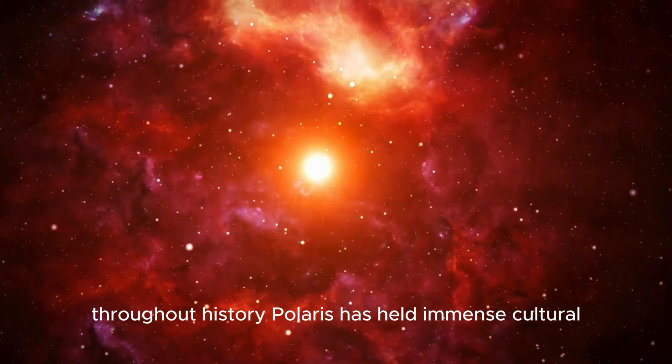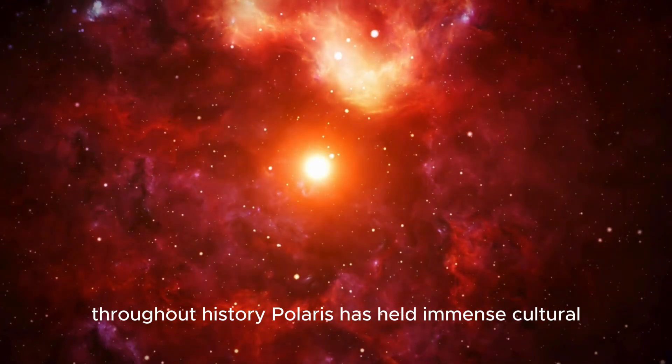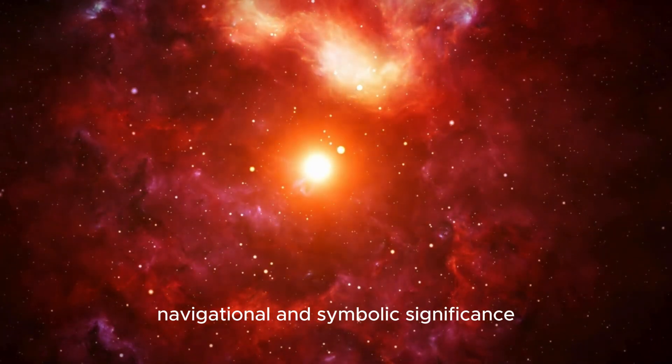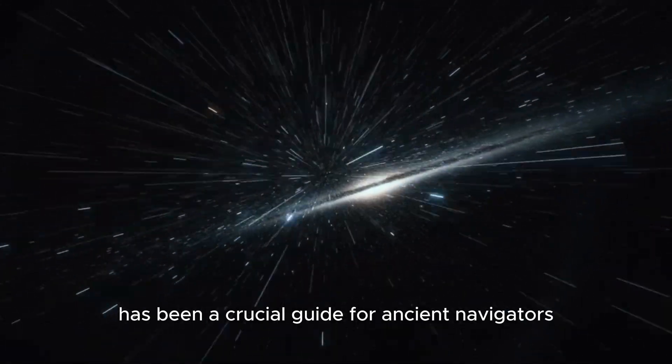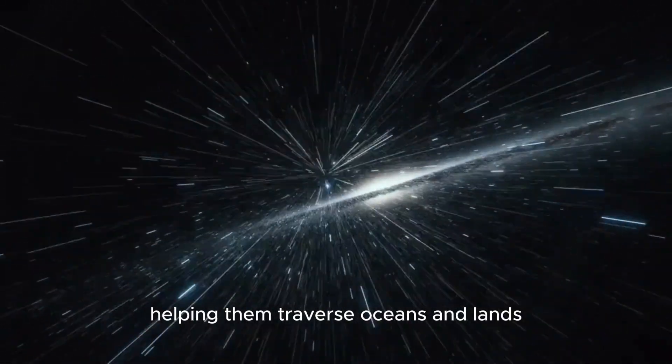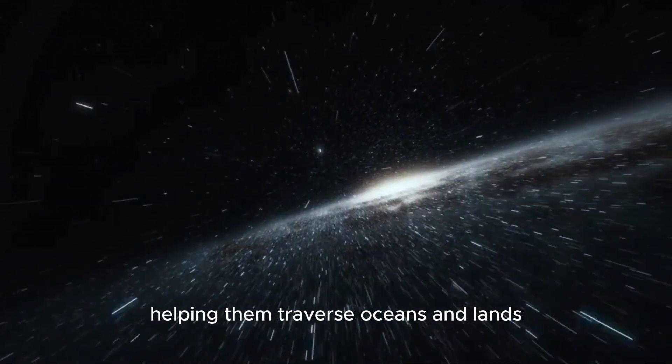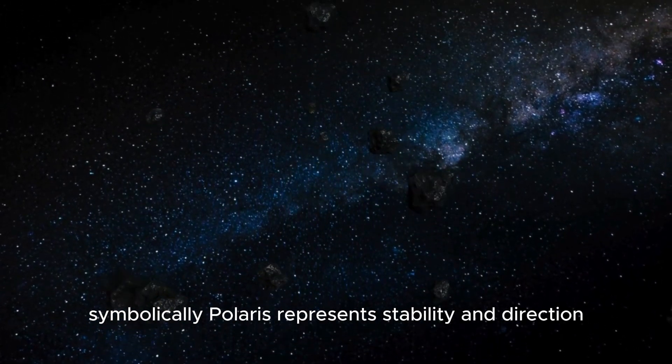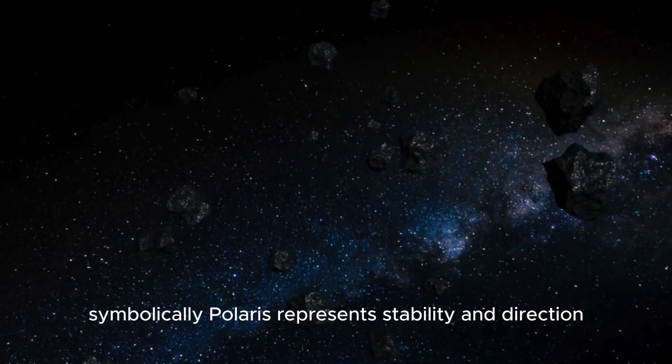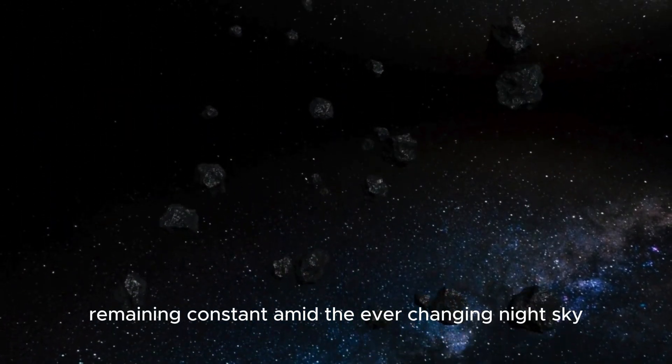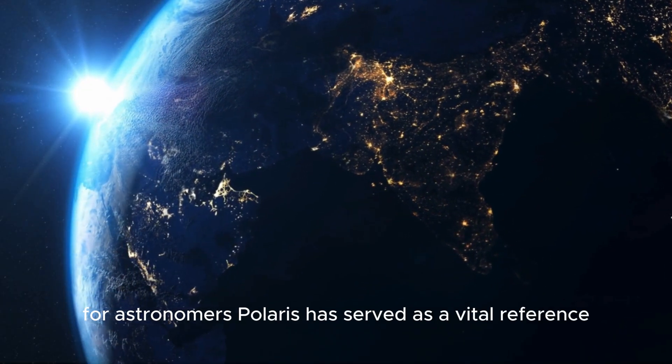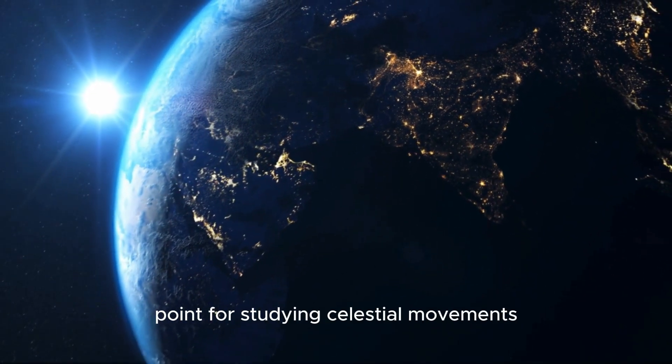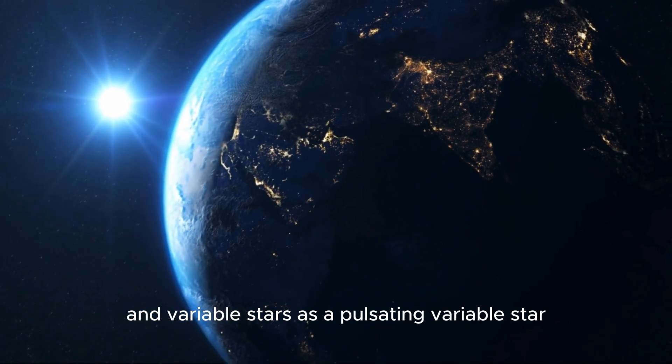Throughout history, Polaris has held immense cultural, navigational, and symbolic significance. Its unwavering presence has been a crucial guide for ancient navigators, helping them traverse oceans and lands. Symbolically, Polaris represents stability and direction, remaining constant amid the ever-changing night sky. For astronomers, Polaris has served as a vital reference point for studying celestial movements and variable stars.